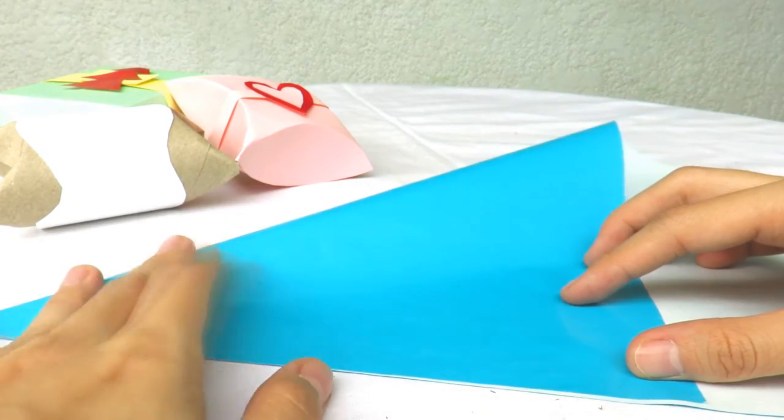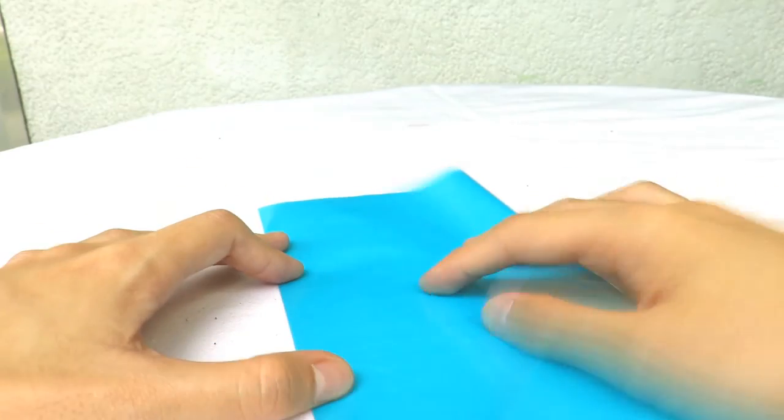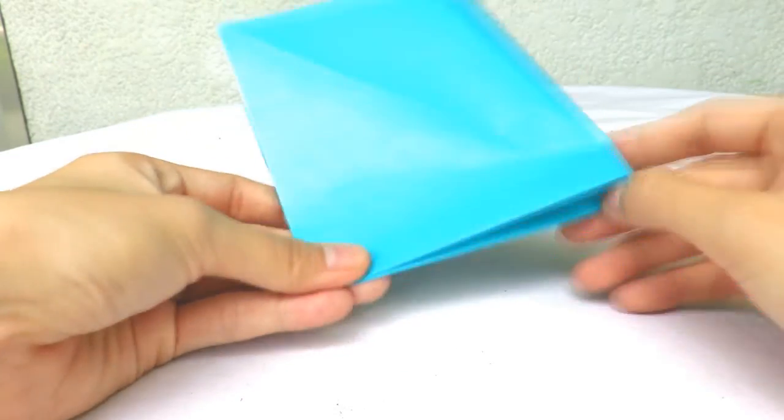Lastly, the one I'm about to make is not a box but an envelope. And yes, it also does not need any glue or any adhesive of some sort. Just get your blue paper and fold it into a triangle like we did in the first one to create a perfect square. Then, fold that in half and in half again to form a small square.